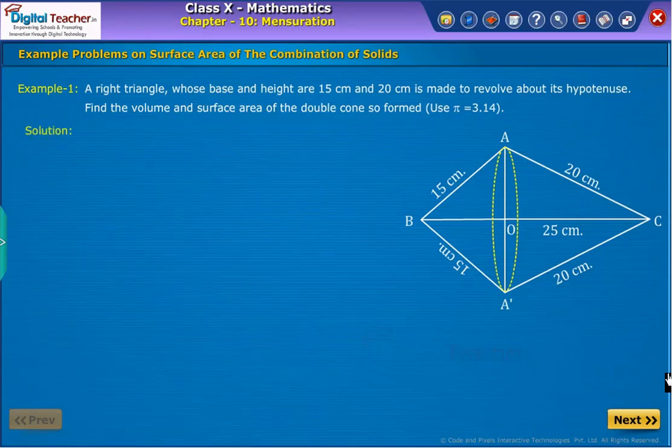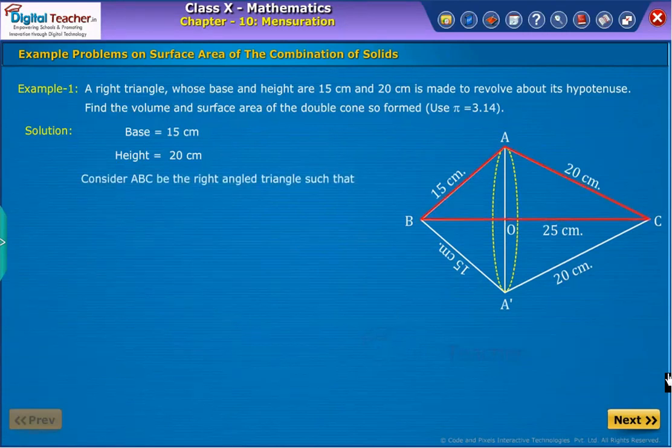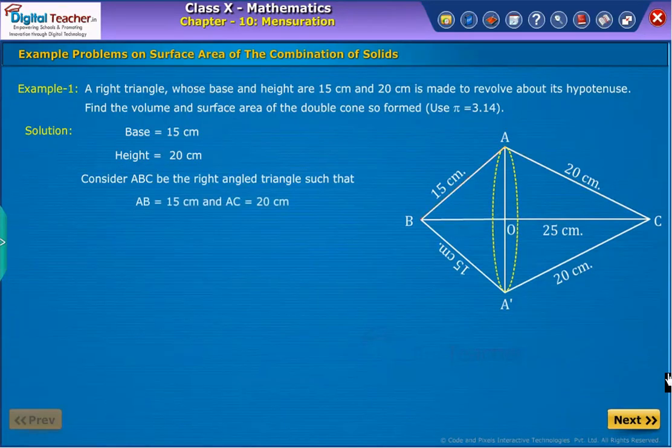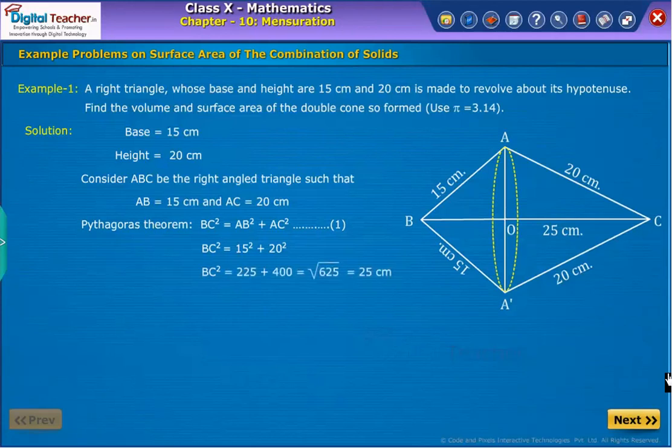Solution: Given that base and height of the triangle are 15 cm and 20 cm. Let us consider ABC is a right-angled triangle such that base AB equals 15 cm and height AC equals 20 cm. Using Pythagoras theorem for triangle ABC, we obtain as equation 1. Now, substitute the values of AB and AC in equation 1. Then we obtain BC equal to 25 cm.